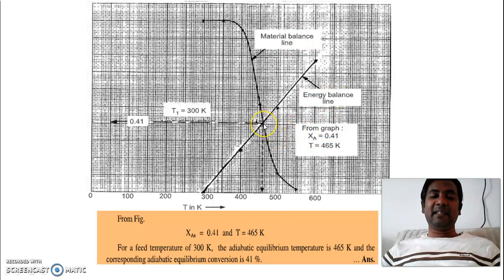When they intersect each other, this is the ideal situation. So from graph, X_A is 0.41 and temperature is 465 Kelvin. So this is what the ideal situation for this reaction. The equilibrium conversion will be 41% at T is equal to 465 Kelvin.